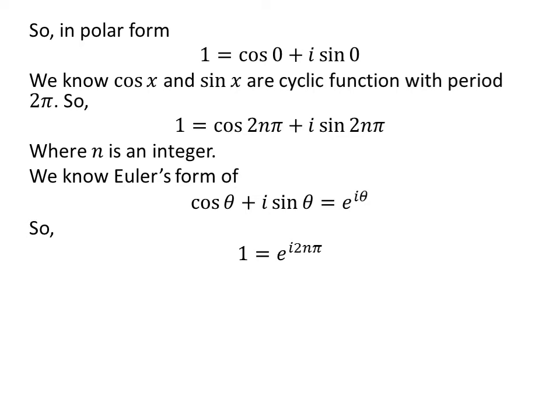We know Euler's form gives us exponential of i times 2 times n times pi, where n is an integer. Thus, z is equal to i times 2 times n times pi, where n is an integer.